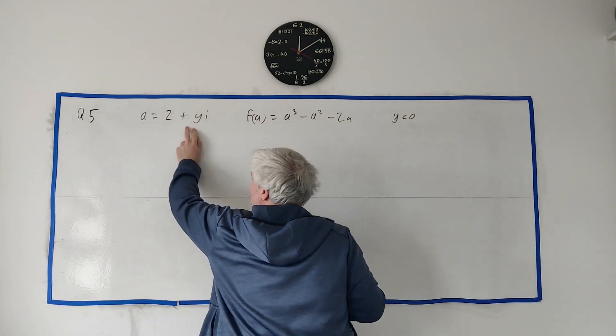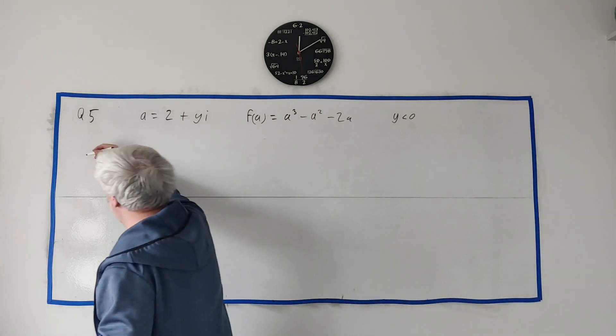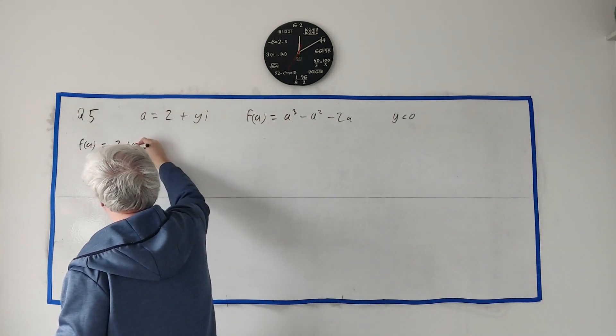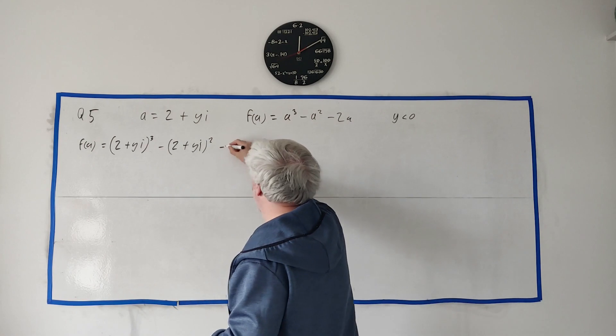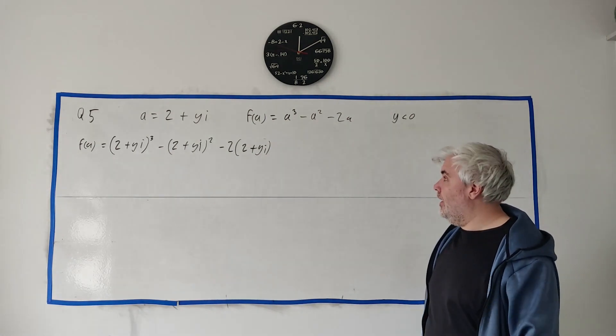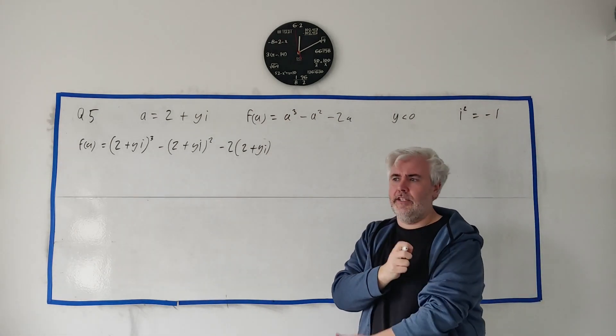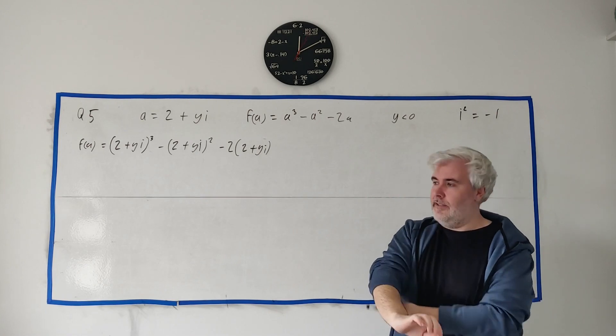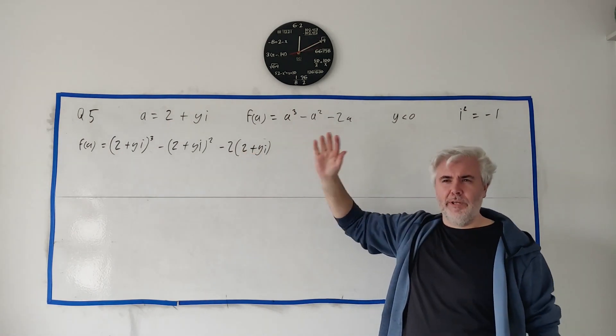So we know what a is equal to. So all we have to do is fill a into all of these. And that's where the mess begins. Let me write it out first. Let me write what I would do sort of first. So instead of a cubed, I would put in 2 plus yi cubed minus 2 plus yi squared minus 2 times 2 plus yi. Now, the only really tricky thing here is you need to remember that i squared is equal to minus 1. Other than that, I would expect students a couple of years below your level to be able to do this. Now, I would expect most of them to make mistakes. At your level, I expect a good few of you, 10, 20% that make mistakes. When I first did this, well, actually it was in Part B, I made a silly mistake.